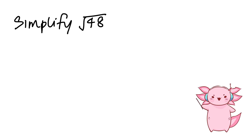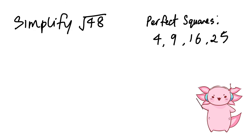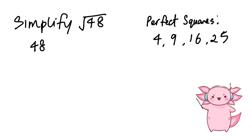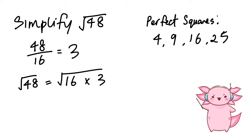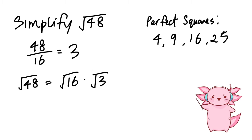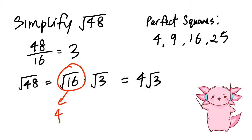To simplify the square root of 48, look for a perfect square number like 4, 9, 16, or 25 that divides 48. 48 divided by 16 gives us 3, so we rewrite 48 as 16 times 3. We split apart the square root, and the square root of 16 is just 4. So our final answer is 4√3.